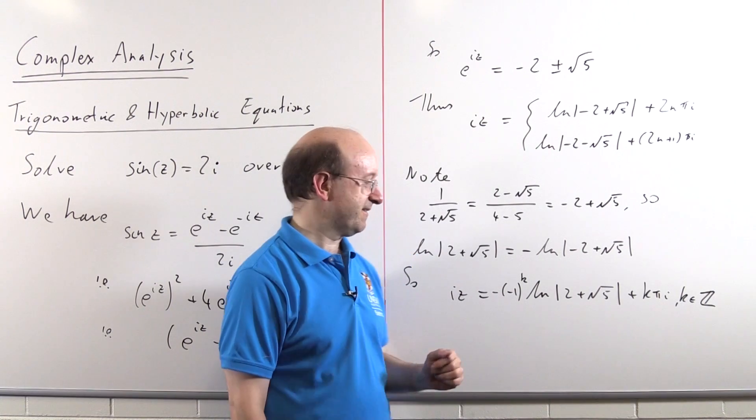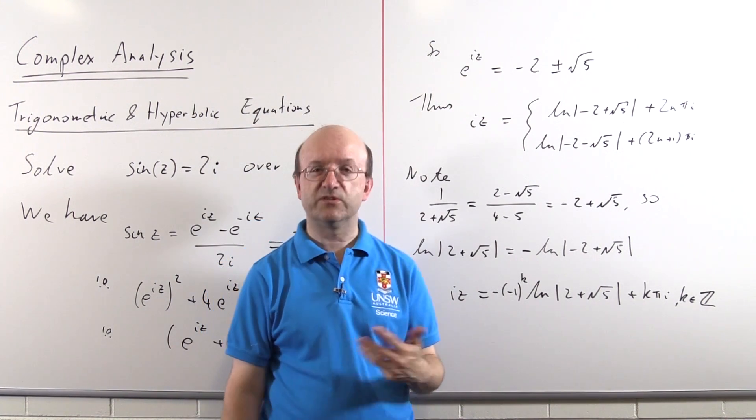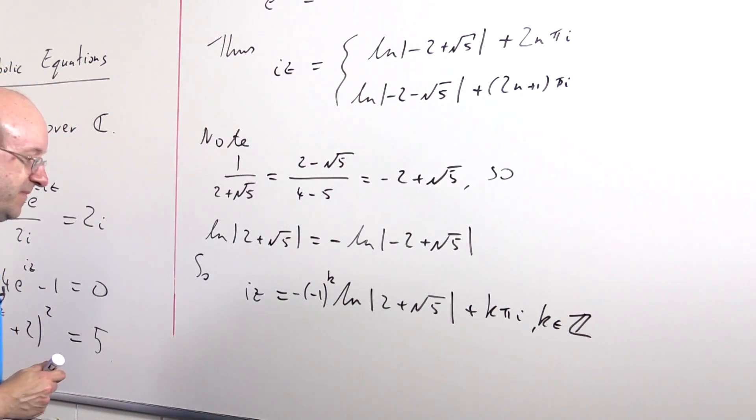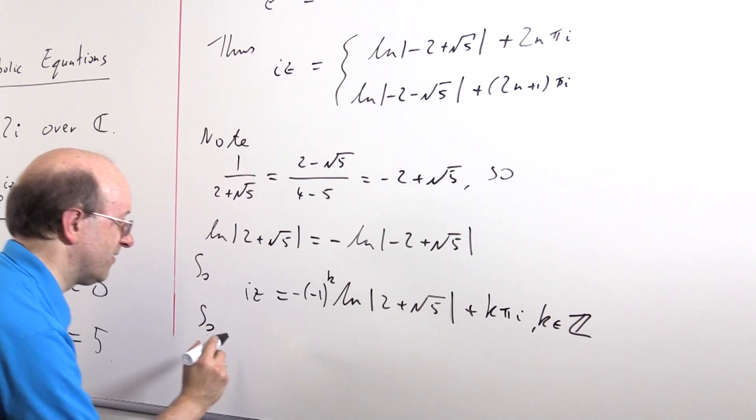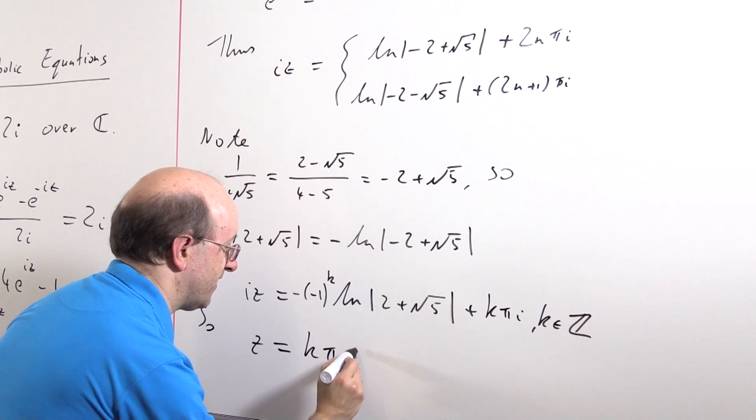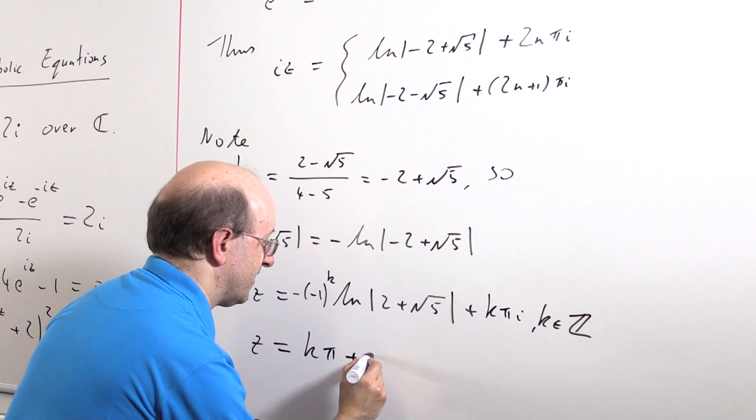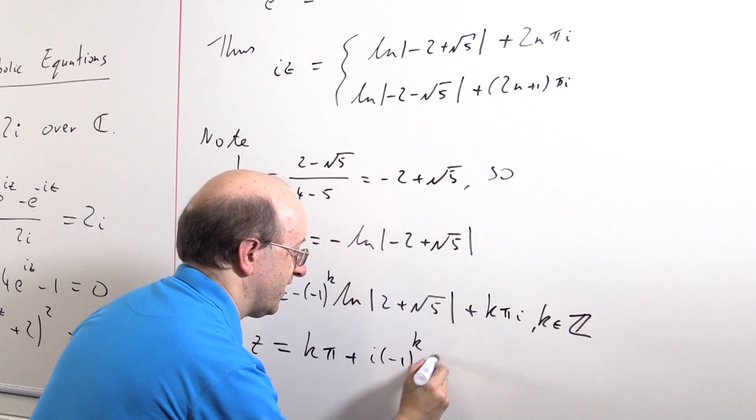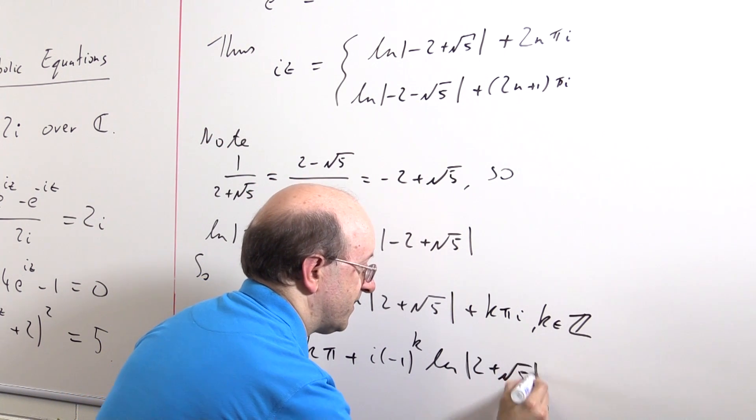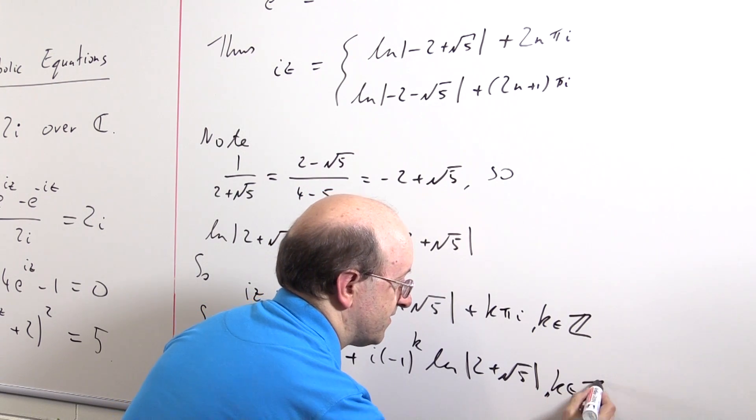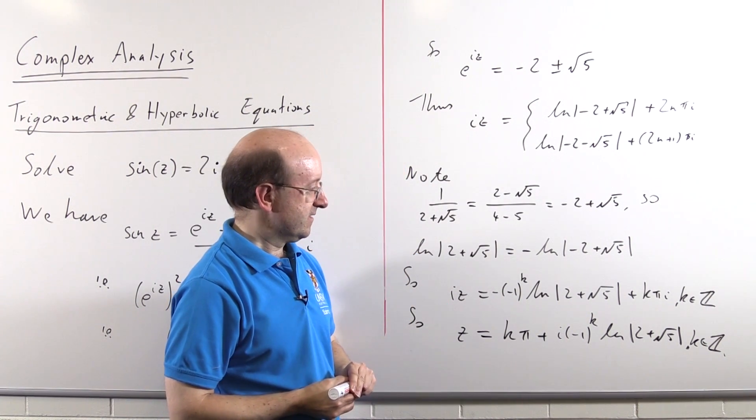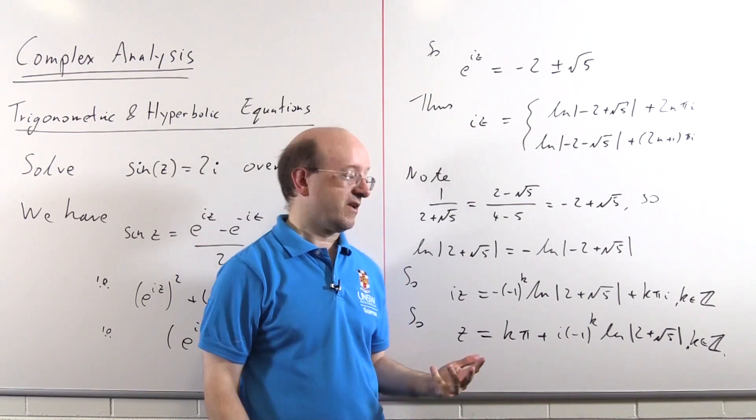So what have we got? We've got z is, and we'll put the real part first of course, k pi plus i times minus 1 to the k log mod 2 plus root 5 for arbitrary integer k. So that's the first way of doing it. It's my personal preference. Because you get an answer out that's in terms, simply, of multiples of pi and a log.